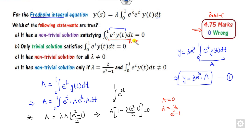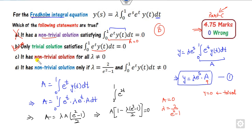This means either a = 0 or λ = 2/(e² − 1). If a = 0, then y = 0, which is the trivial solution. So option A — which says it is a non-trivial solution — is cancelled out. Option B is correct because a = 0 gives the trivial solution. However, if λ is non-zero but a happens to be 0 in some particular case, y is still trivial, so option C is also discarded.